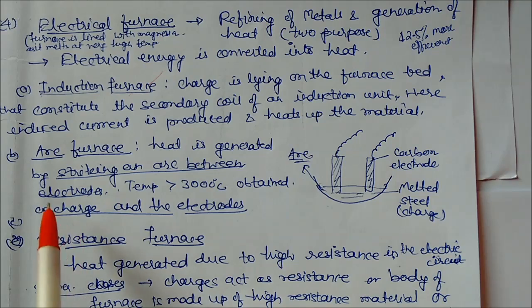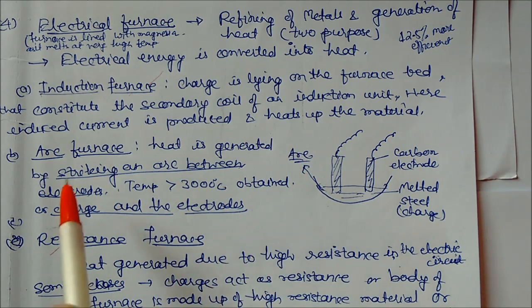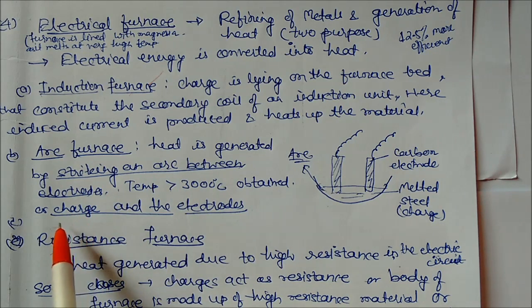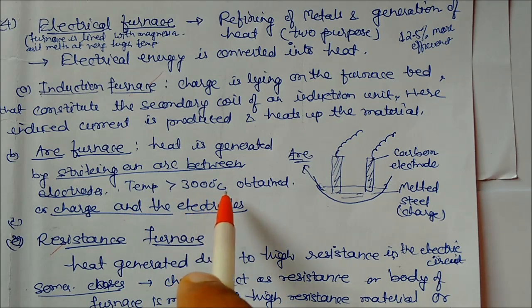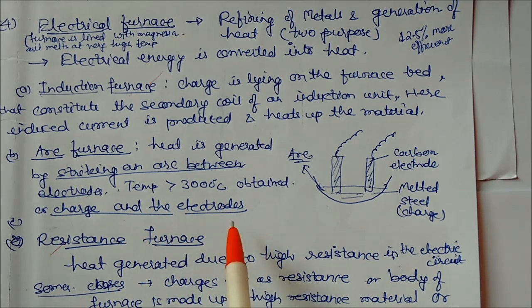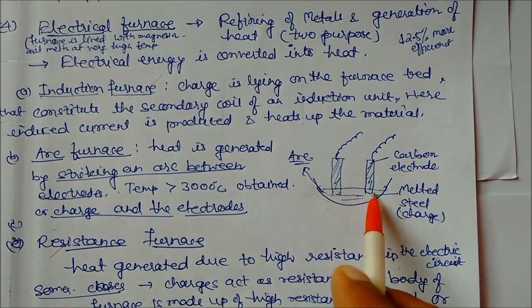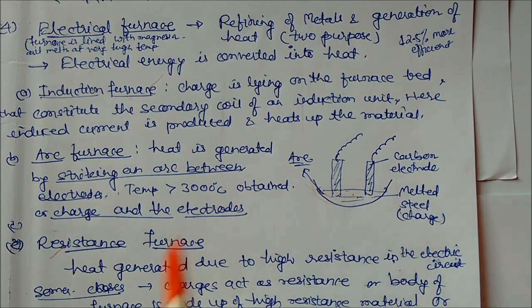Next is arc. Heat is produced by striking arc between electrodes, so two electrodes or a charge and the electrode. The temperature may rise more than 3000 degrees centigrade. This is the highest temperature in all the furnaces. This is a chamber in which charge is there and two electrodes will strike each other or they can strike with the charge. Heat is generated and this will get melted.